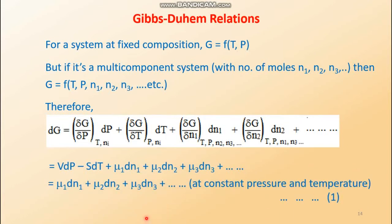At constant temperature and pressure, dP and dT both become zero, so the first two terms on the right-hand side vanish. The right-hand side then starts from the third term, giving dG equals μ1 dN1 plus μ2 dN2 plus μ3 dN3 plus dot dot dot at constant temperature and pressure. This is equation number one.